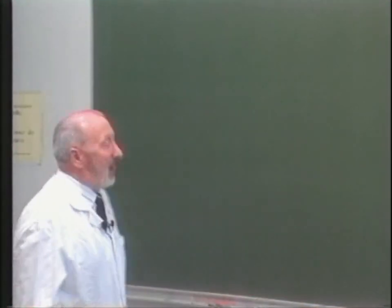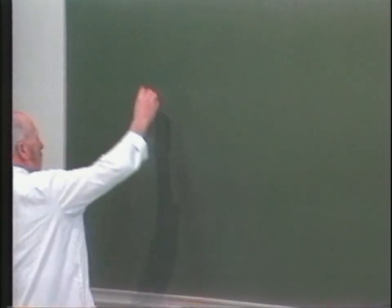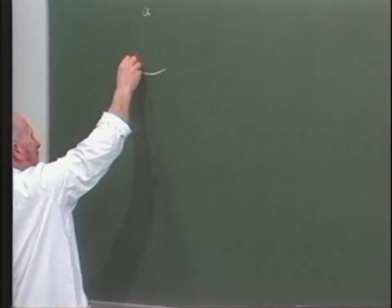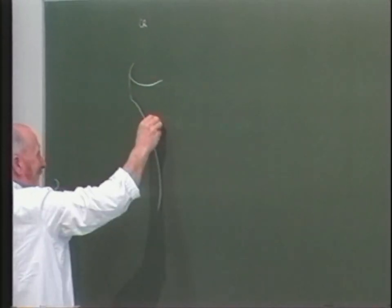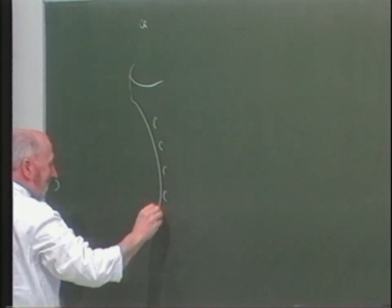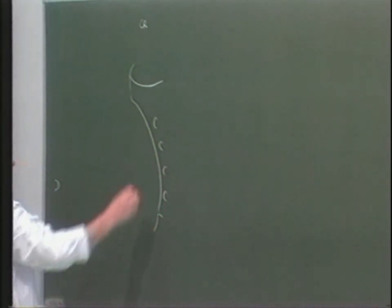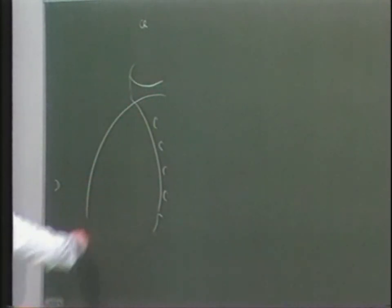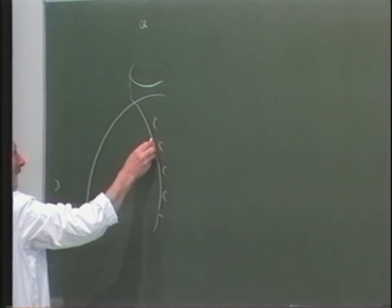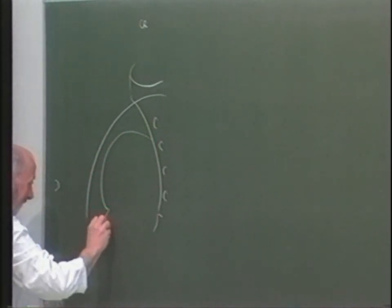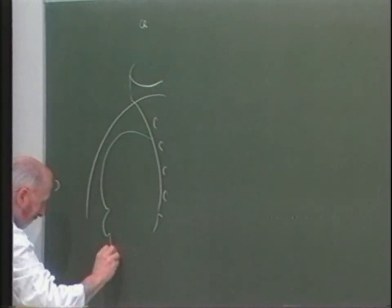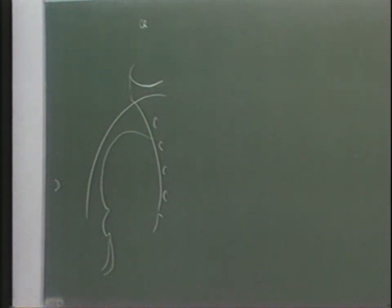Parler du mésorectum, c'est aborder la cavité pelvienne. Sur une vue de face de l'hémibassin droit, caractérisé vers l'arrière par le sacrum, à la face antérieure duquel on trouve les trous sacrés antérieurs, l'articulation sacro-coccygienne. Vers l'avant : la ligne du détroit supérieur, avec l'articulation sacro-iliaque, la grande échancure sciatique, la petite échancure sciatique, et la tubérosité ischiatique.